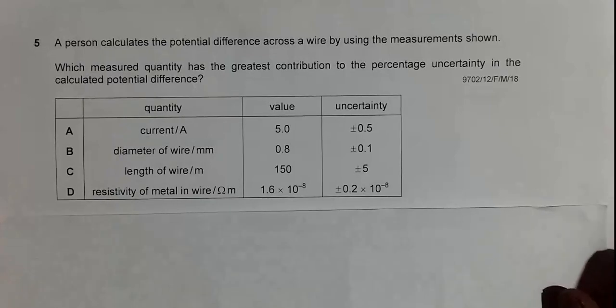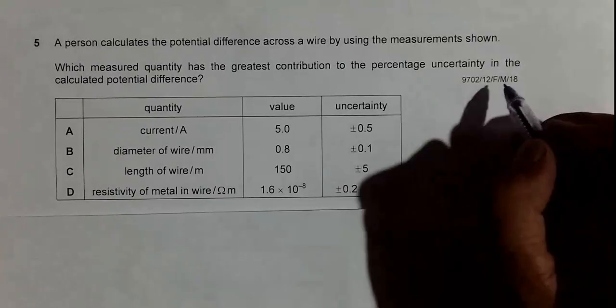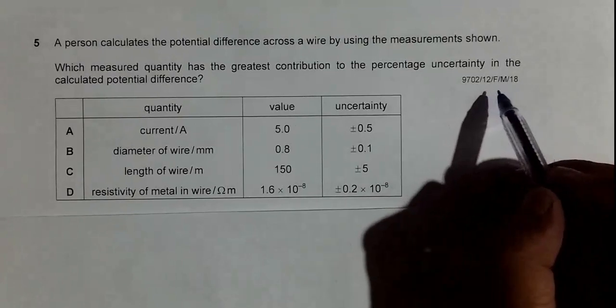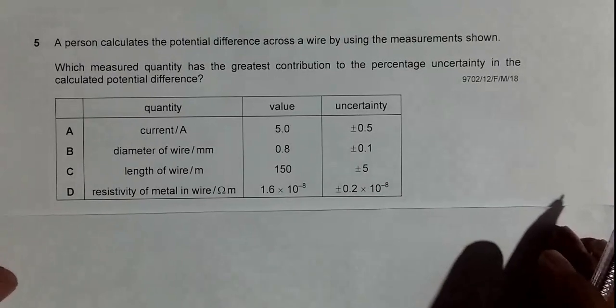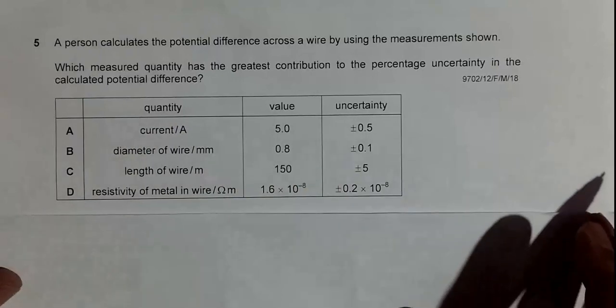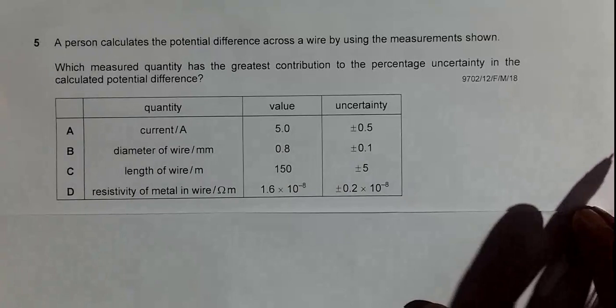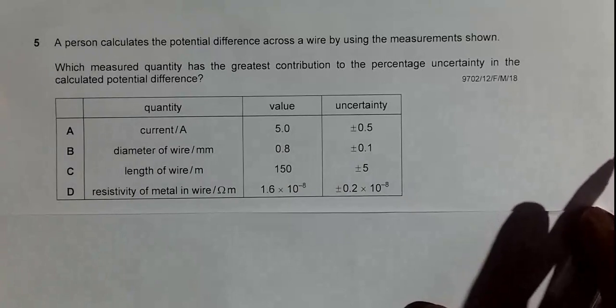This is the question from 2018 February March season, paper 1-2, question number 5. It asks that a person calculates potential difference across a wire using the measurements shown. Which measured quantity has the greatest contribution to the percentage uncertainty in the calculated potential difference?